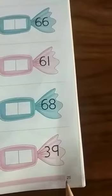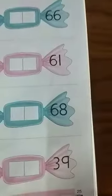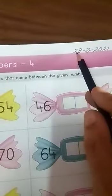Now children, look at page number 25. Here the topic is between numbers. So children, first put today's date 23.03.2021.